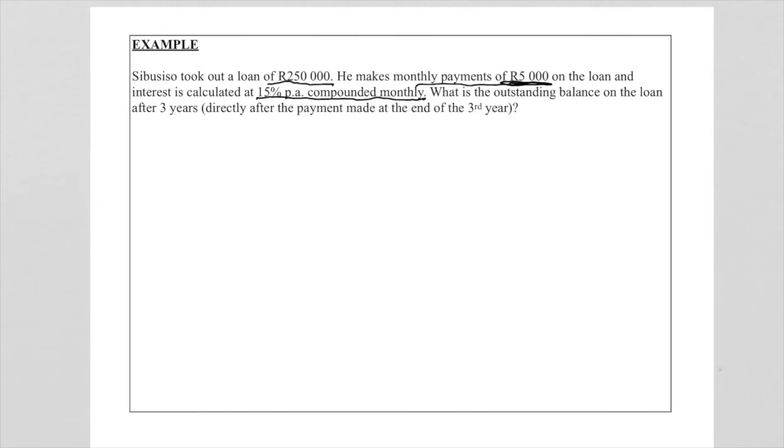Please remember, loan is 250,000, that is the monthly payment, that is the interest rate. So let's just write that down quickly. So our loan, that is our initial or present value, is 250,000. Our monthly payment which is x is 5,000, and our interest rate which is calculated monthly is 0.15 (that is the 15%) over 12 because it's a monthly interest.